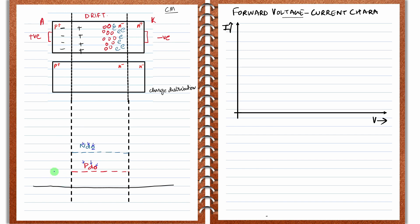Now let us draw the minority carrier concentration — that is, the n-type charge carriers in the p-plus material in the equilibrium condition. This line I am drawing represents the n-type charge carriers in the p-type material at equilibrium. Similarly, in the n-plus side, we have p-type charge carriers as minority charge carriers. This line represents the p-type charge carriers in the n-plus side in equilibrium. These are all the minority charge carrier concentrations.